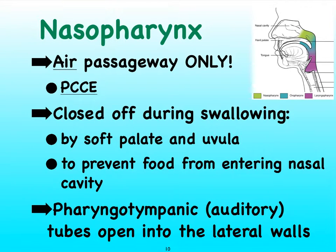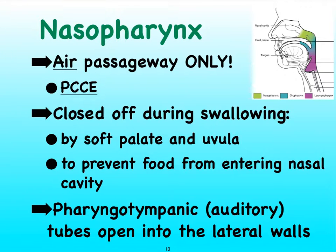First of all, the nasopharynx, which you can see here in the light green, is the area posterior to the nasal cavity. That particular part of our pharynx is really designed for the passage of air only, and therefore we see that it's lined with pseudostratified ciliated columnar epithelial tissue.